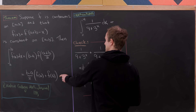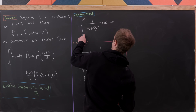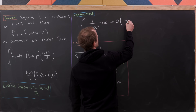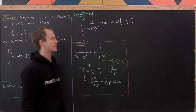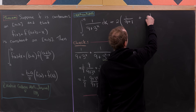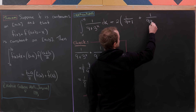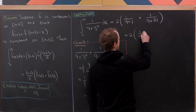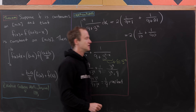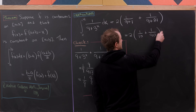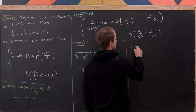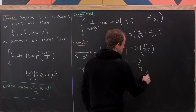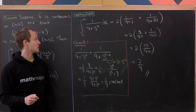Using the second version: (b - a)/2 = (4 - 0)/2 = 2, times [f(0) + f(4)] = 2 times [1/(9 + 3^0) + 1/(9 + 3^4)] = 2 times [1/10 + 1/90]. Finding the common denominator of 90: that's 9/90 + 1/90 = 10/90 = 1/9. Multiplying by 2 gives 2/9. That's the final answer for this integral.